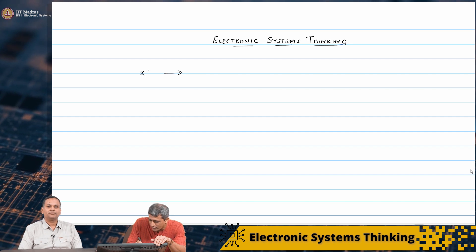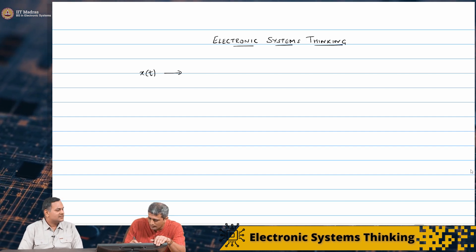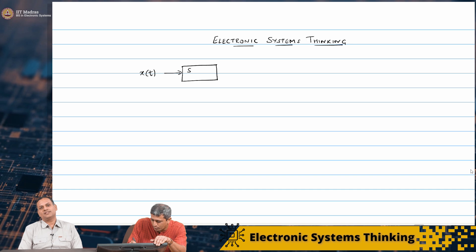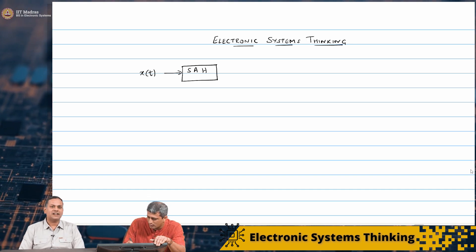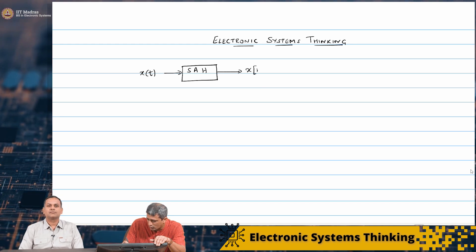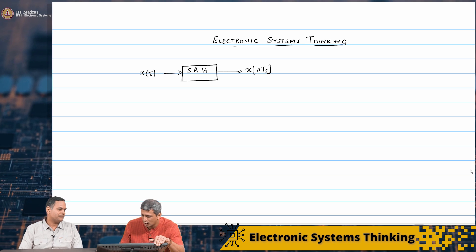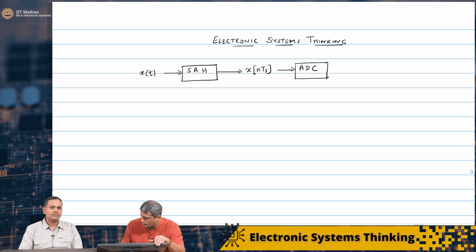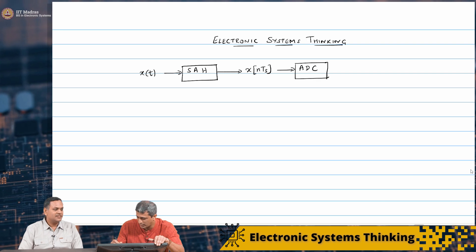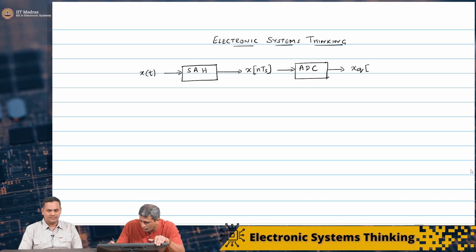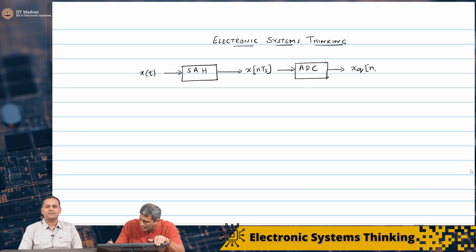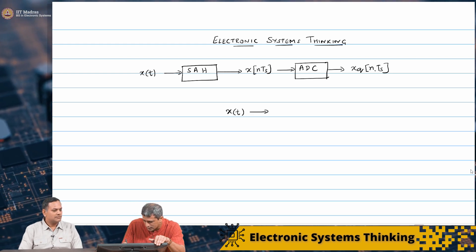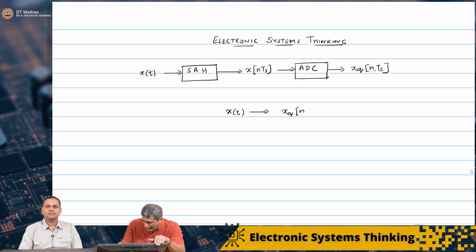We took a signal which was a continuous time signal, an analog signal X of t, and we basically time sampled it. We did a sample and hold, converting it from continuous time to discrete time, and we got X of nTs. Then we passed this through an ADC - analog to discrete amplitude signal - and we got a quantized version of this, X_q of n. You can keep the Ts or drop it, it does not matter.